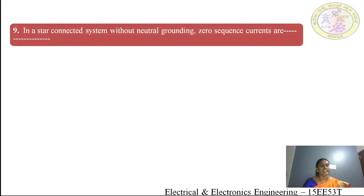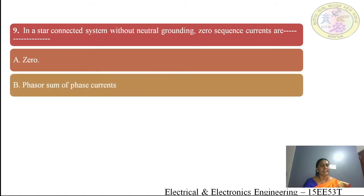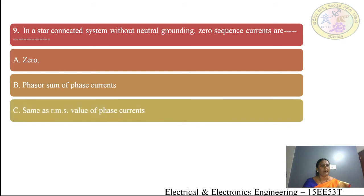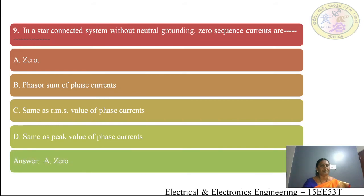Ninth question: in a star connected system without neutral grounding, zero sequence currents are — (A) zero, (B) phasor sum of phase currents, (C) same as RMS value of phase currents, (D) same as peak value of phase currents. The answer is zero. In a star connected system without neutral grounding, the sum of zero sequence currents is equal to zero.